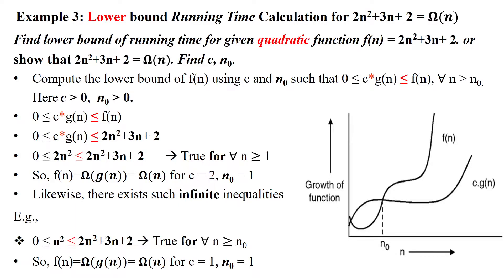Welcome to lower bound running time calculation for the given function f(n) = 2n² + 3n + 2 = Big Omega of n². It can be asked as: show that 2n² + 3n + 2 = Big Omega of n².